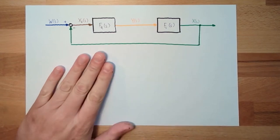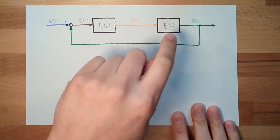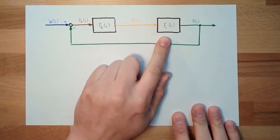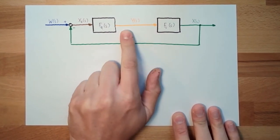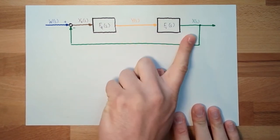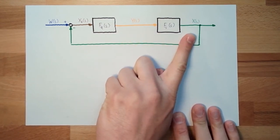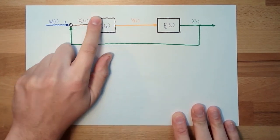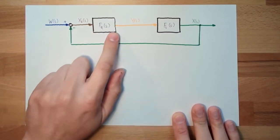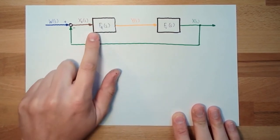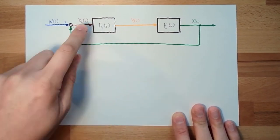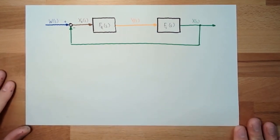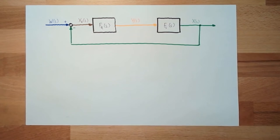Here this is our control loop. There is some system transfer function which will bring our correcting variable to our regulated variable and our controller transfer function, regulator transfer function, which will translate the difference, the controlling difference, to a new correcting variable.